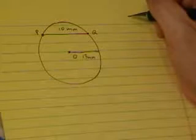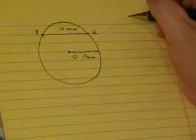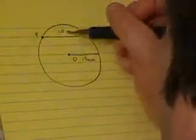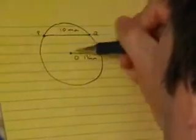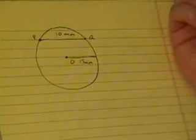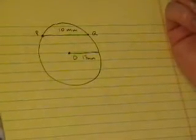Alright, so far so good. Find the distance from chord PQ to the center O. What is the distance from chord PQ to the center O? And how even do we measure the distance?